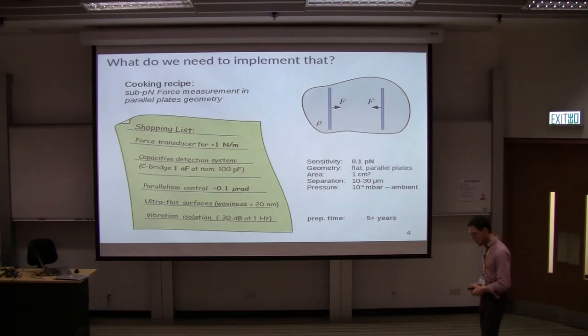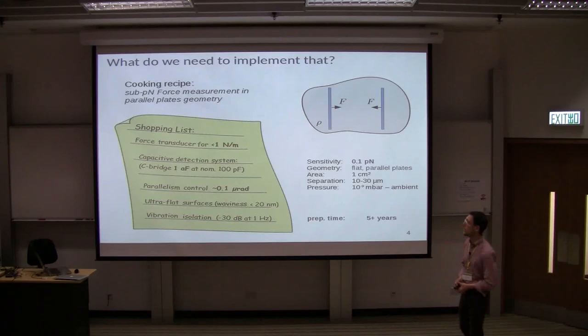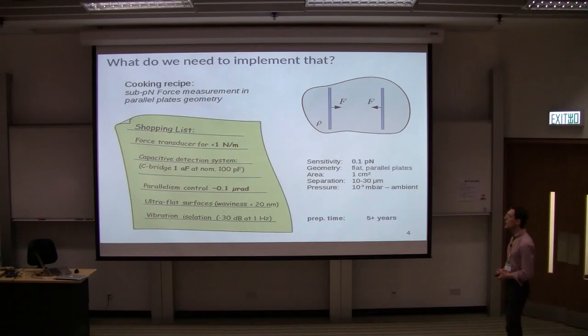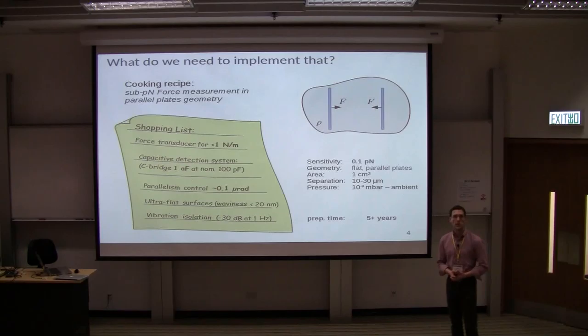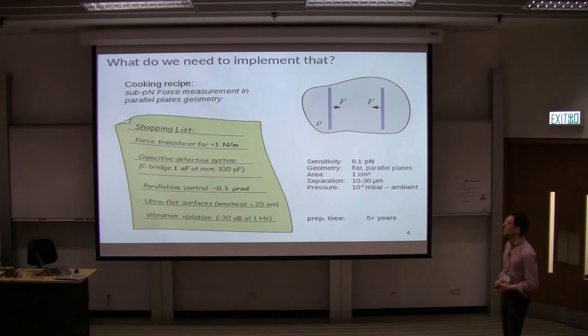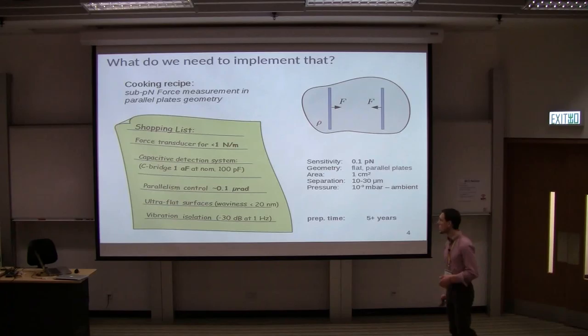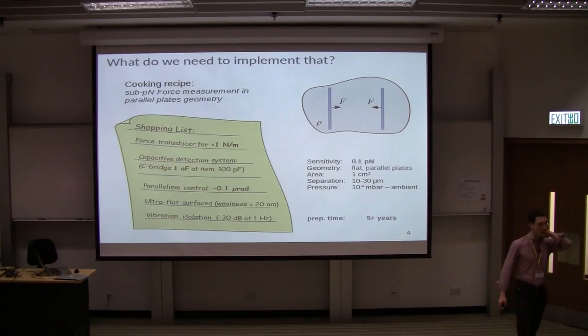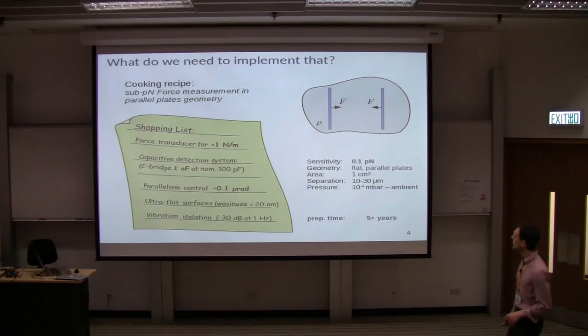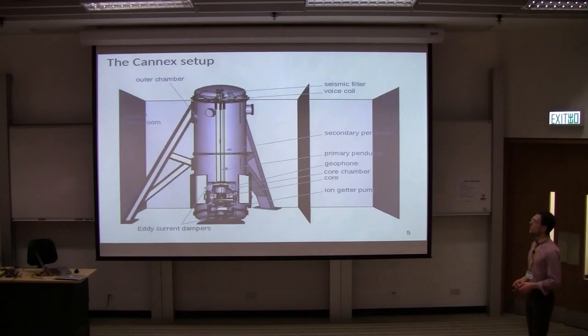And on this grocery list, we would have a force transducer which allows us to be sensitive enough. Force transducer needs to work together with a detection system. In this case, we chose a capacitive detection system, similar to Chris. You need to note that here we have 10 to the minus 8 relative sensitivity. So that's really at the verge of technical impossibility. We have parallelism control. We need optically flat surfaces. And we need very good vibration isolation. So all these points need attention. And we are already five years into the project, about the same order of magnitude as Ricardo with his experiment. But we are not there. And it's very difficult.